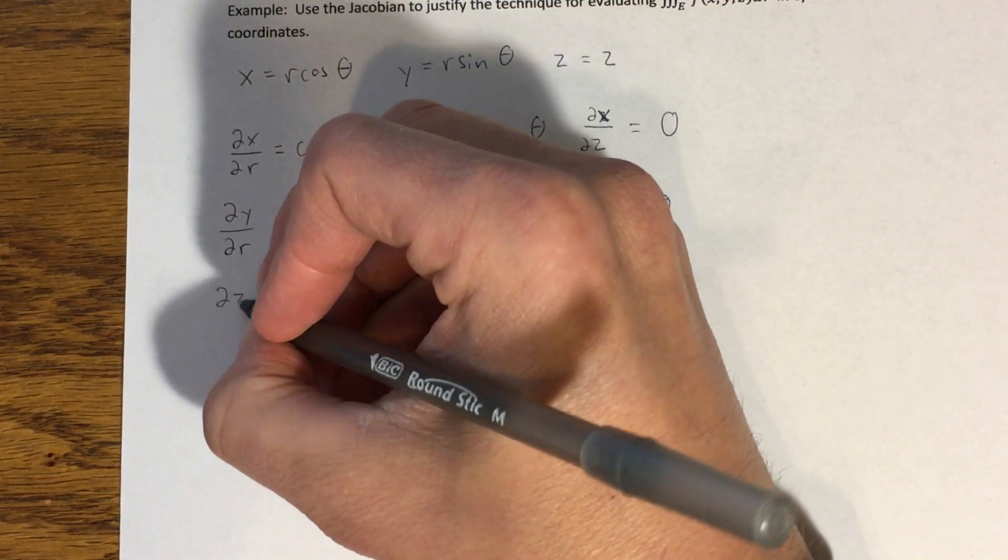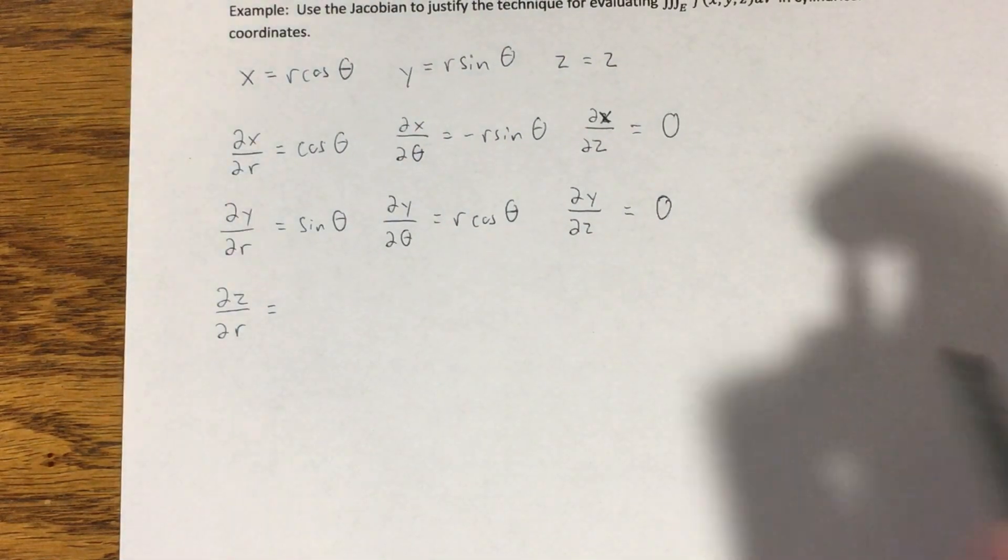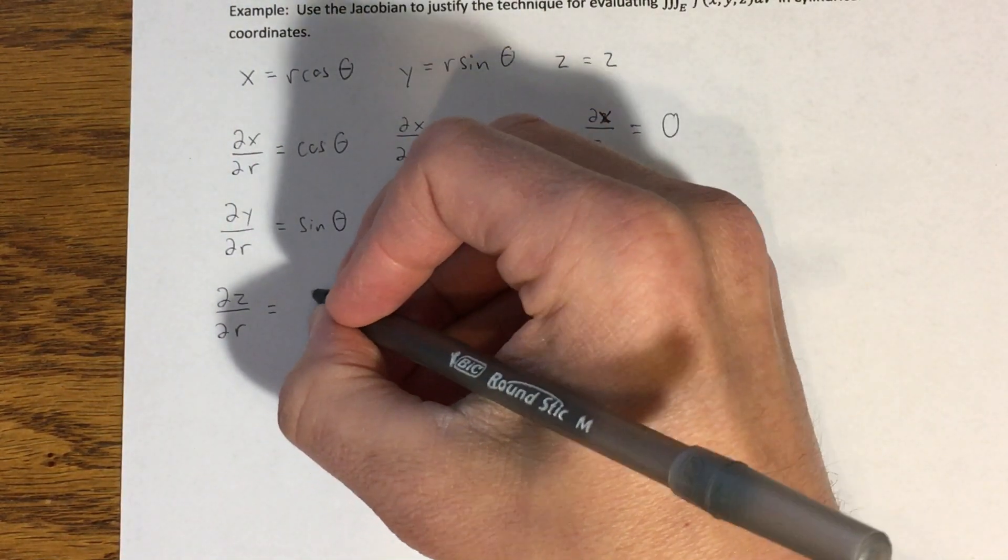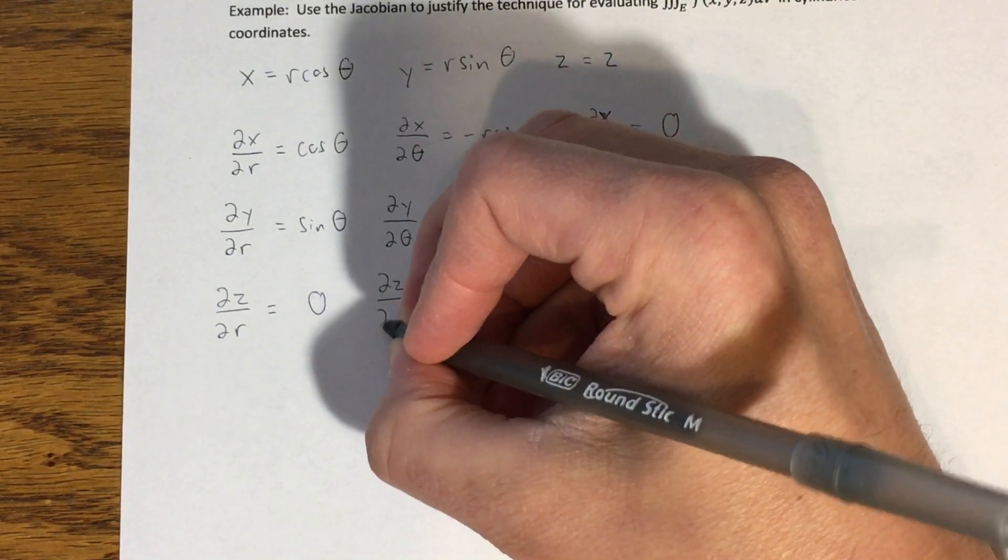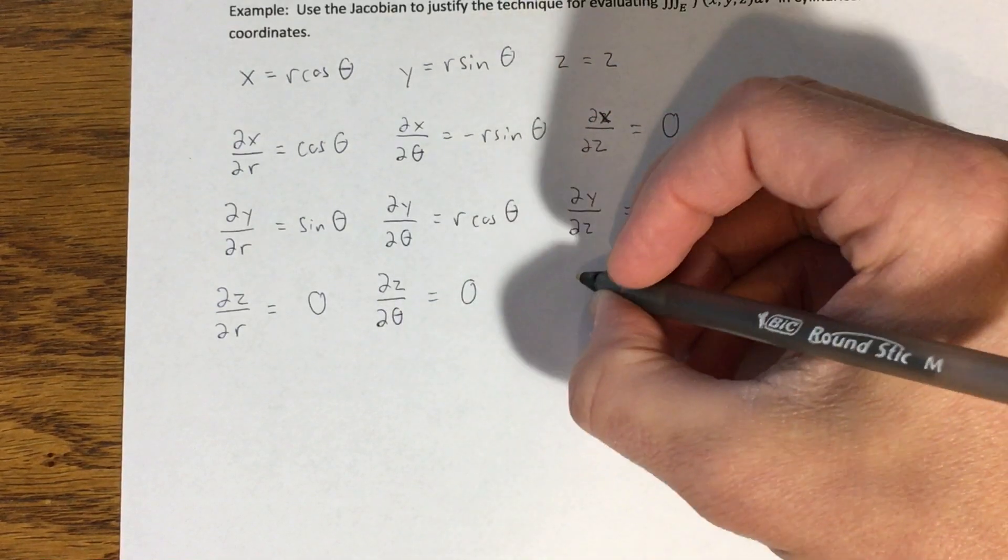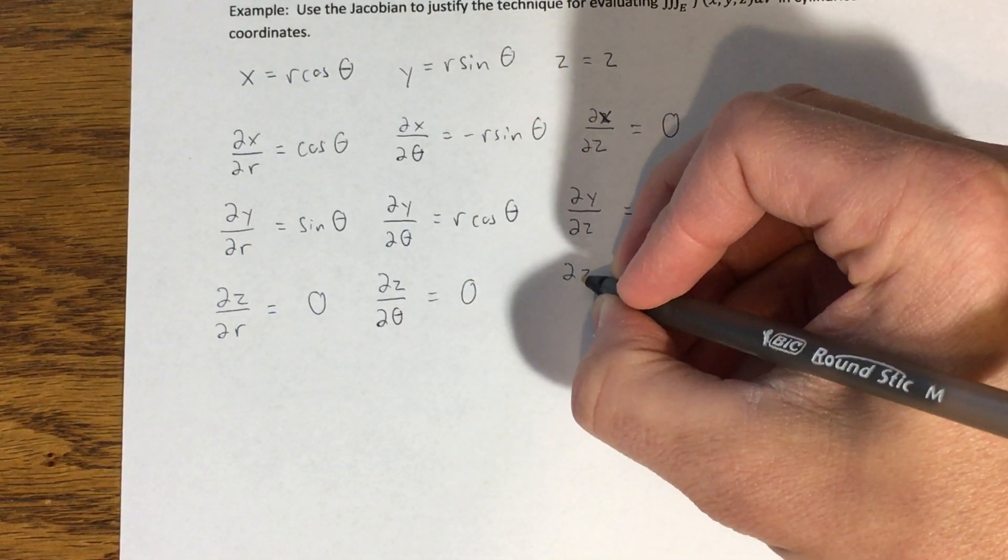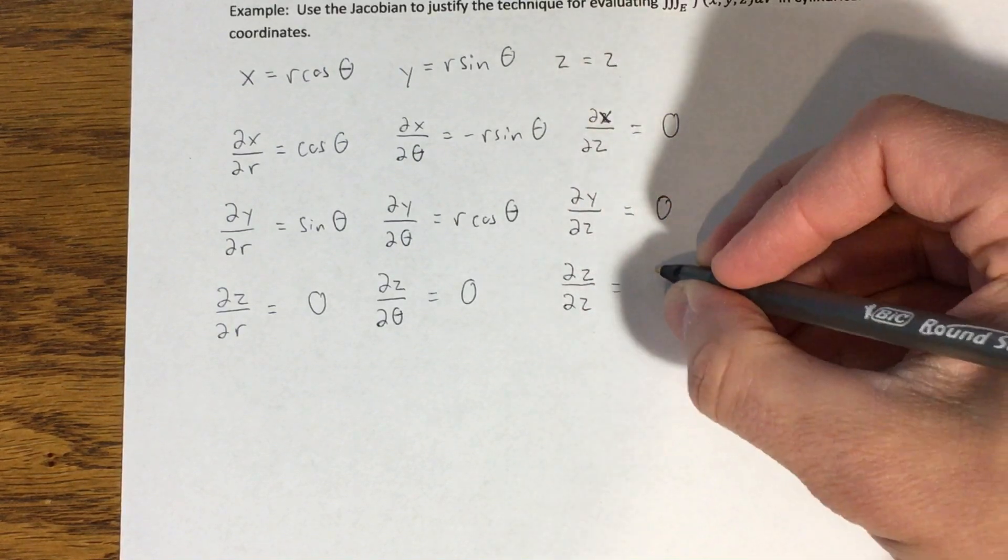Okay? And then the z's. Partial of z with respect to r. Okay? Well, there is no r here, so this gives me a zero. Partial of z with respect to theta is also going to be zero. And then finally, partial of z with respect to z is just going to be one.